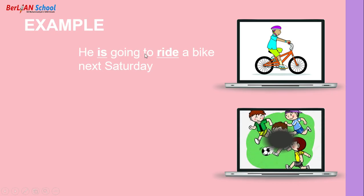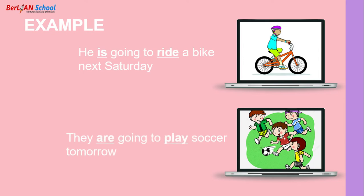Next example: 'They are going to play soccer tomorrow.' It means they will play soccer tomorrow — the playing hasn't happened yet. After the subject comes 'to be', then 'going to', then the verb in base form, then the object. After the object, you can add a time expression indicating when.